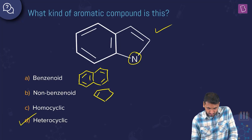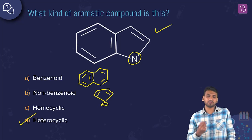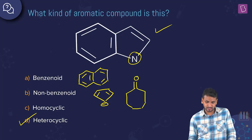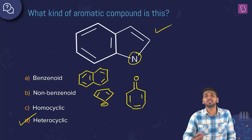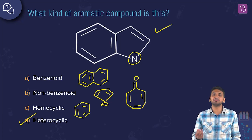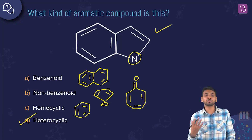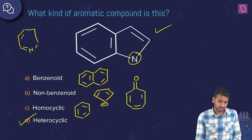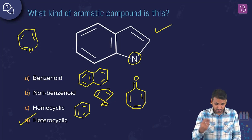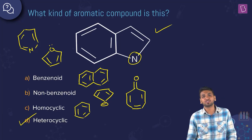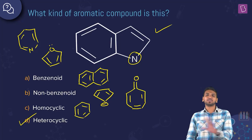To explore the other options: benzenoid compounds contain benzene, such as naphthalene. Non-benzenoid aromatic compounds include cyclopentadienyl anion or azulene (tropone as a neutral example). Homocyclic compounds like benzene have all the same atoms in the ring — all carbon. Heterocyclic compounds have different atoms; examples include pyridine (nitrogen) and furan (oxygen). Option D — heterocyclic — is the correct answer.